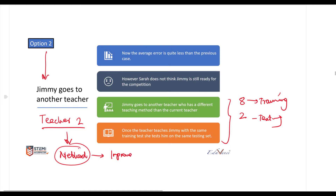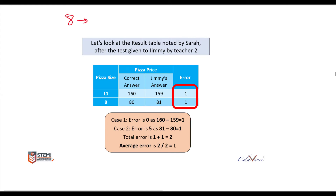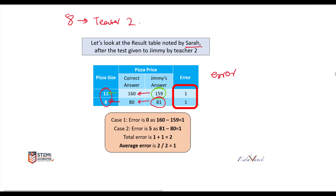After Jimmy goes through the eight sizes with teacher number two, the teacher then decides to test Jimmy with 11 and 8 inches, and Sara is making note of his results. The teacher asks Jimmy: what is the cost for 11 inches? Jimmy says 159. And for 8 inches, what is the cost? Jimmy says 81. Sara then goes ahead and calculates the error.